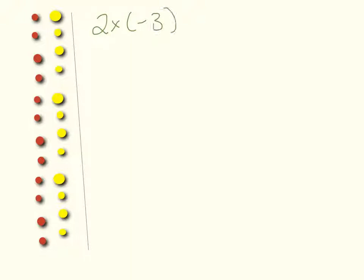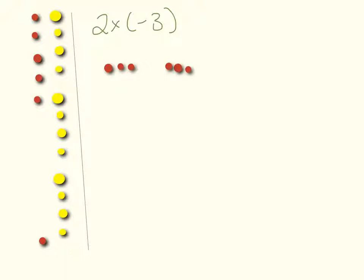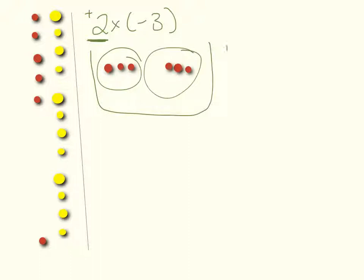Let's look at another one. If we have 2 times negative 3, that means we have 2 groups of negative 3, which gives us 6 tiles. You can think about it as starting with no tiles in the basket. Because the first number is positive, we put in 2 groups of negative 3 into the basket, and we have negative 6 because the tiles are negative.